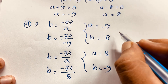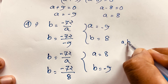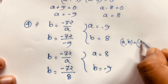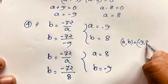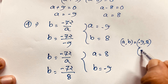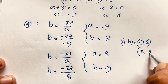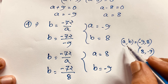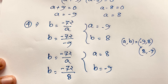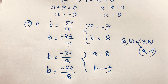So our final answer is (a, b) equals (−9, 8) or (8, −9). This is the solution to our algebra problem. Thank you all! If you enjoyed this Math Olympiad question, please subscribe to our channel for other interesting videos. Goodbye, take care everyone.